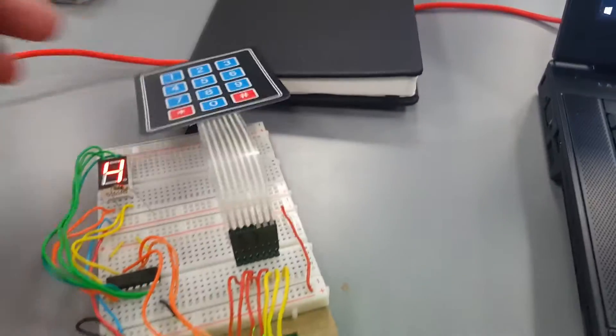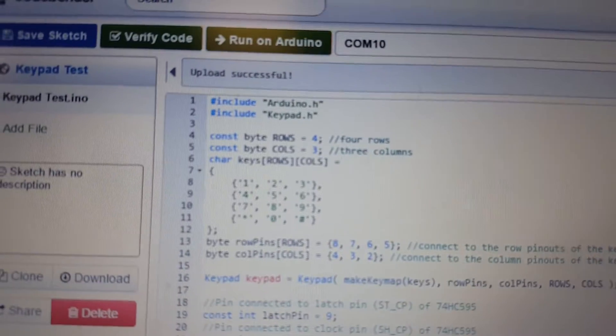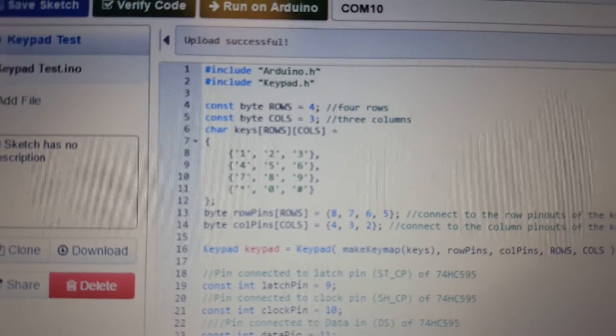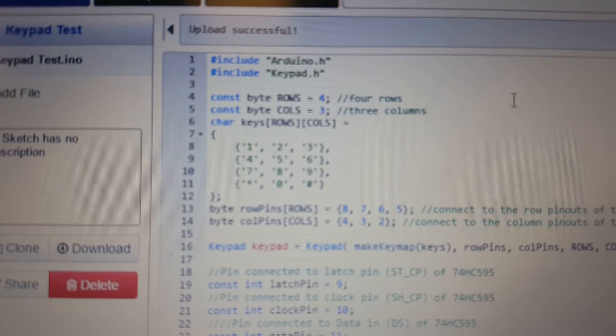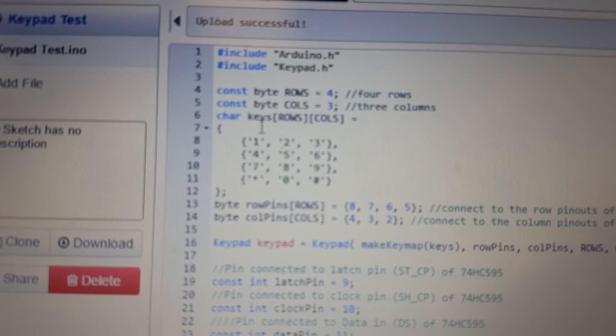Looking at the code on screen, we have to include our keypad header file and then set up the rows and columns in an array so that as the keypad library decodes it, it knows what values to assign.